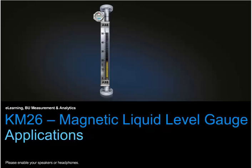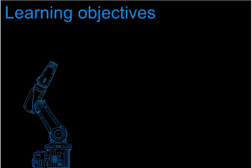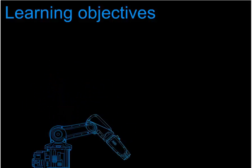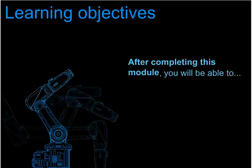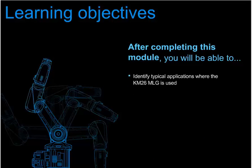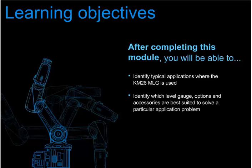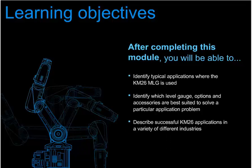This course module will familiarize you with the applications and application areas of the ABB KM26. Upon completion of this module, you'll be able to identify typical applications when a magnetic level gauge is used, identify which level gauge and accessories are best suited to solve a particular liquid level application problem, and describe successful applications and related success stories.